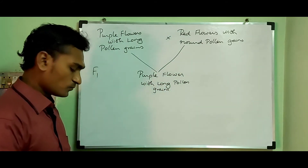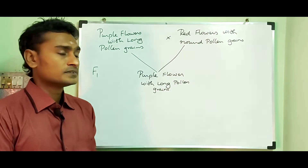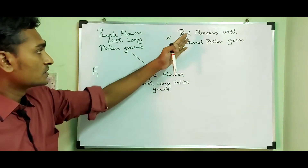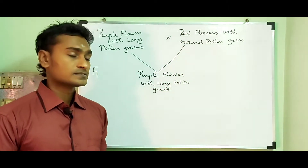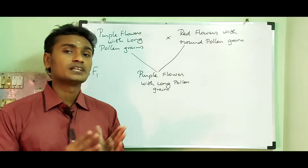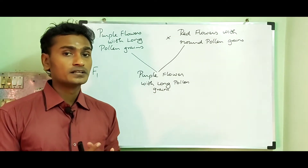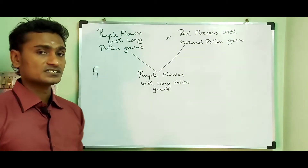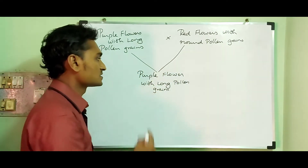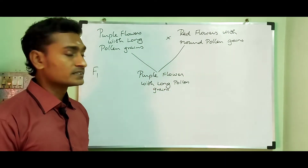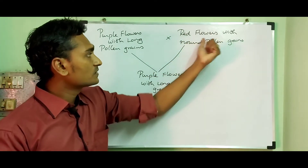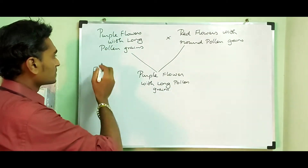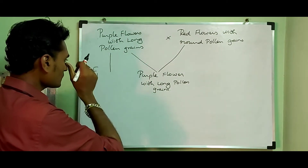The F1 generation indicated that purple flower with long pollen grain was dominant over red flower with round pollen grain, following Mendel's law of dominance. The recessive trait was red flower with round pollen grain.